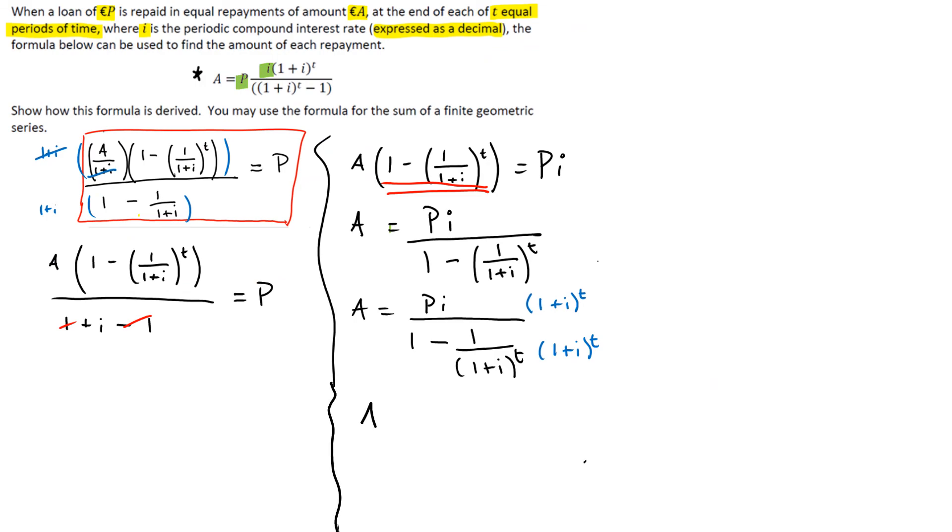We have A equals P I times 1 plus I to the power of T and here we have 1 times so this whole bottom line is going to be multiplied by 1 plus I to the power of T which gives us